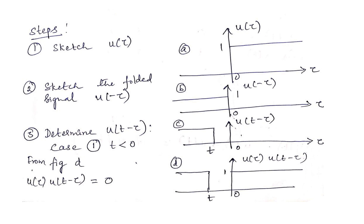Sketching u(t − τ) on the folded signal u(−τ), for t < 0 we move u(−τ) to some value less than 0. The shifted graph is shown in figure (c), where t is some negative value.